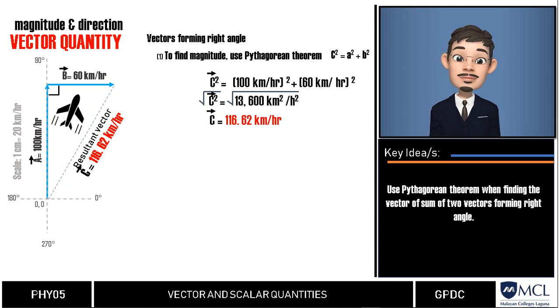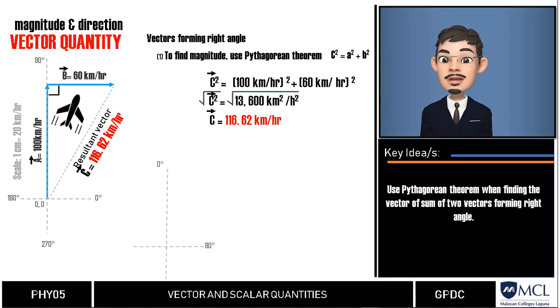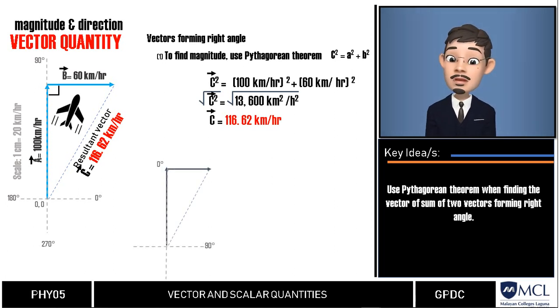The next question would be, in which direction? Remember that in our graph, the final vector is somewhere here between north and east. We want to know how much angle did the airplane deflect from its original direction north after it is caught by the strong wind heading east? A little trigonometry will be helpful.